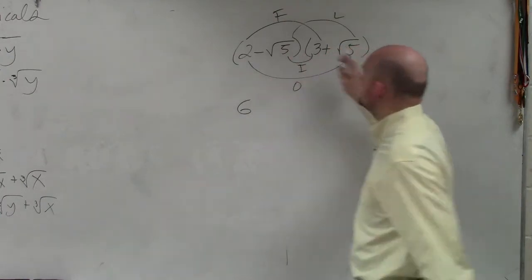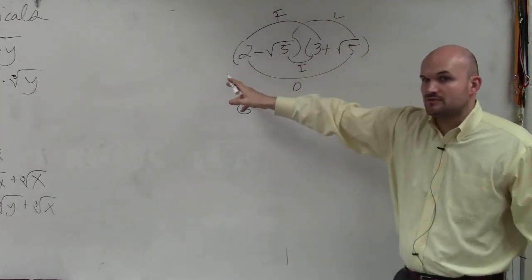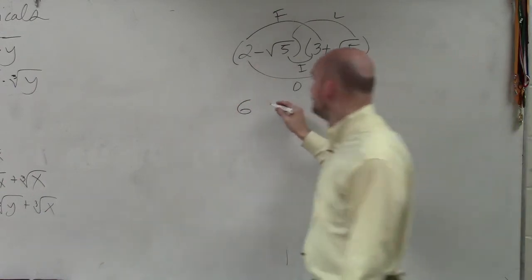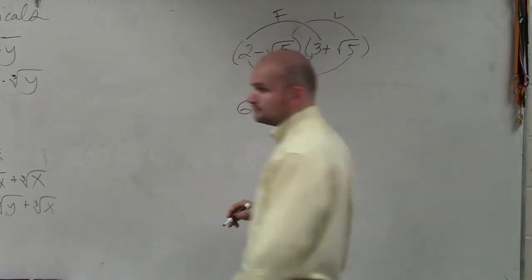The outer term is 2 times the square root of 5. Now this does not have a square root. There's no radical here, right? So I can't multiply the 2 inside the square root of 5. It's just going to be 2 square root of 5.